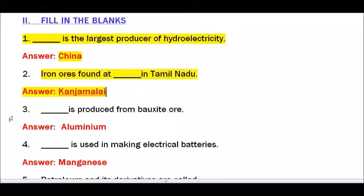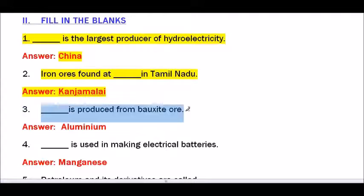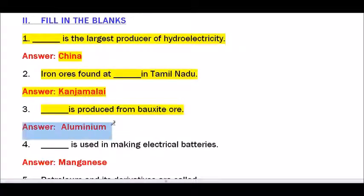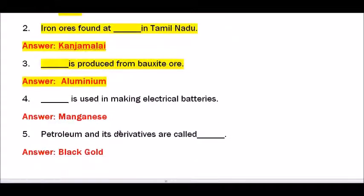Question number 3 — Dash is produced from bauxite ore. The answer is aluminium — A-L-U-M-I-N-I-U-M. Aluminium is produced from bauxite ore.